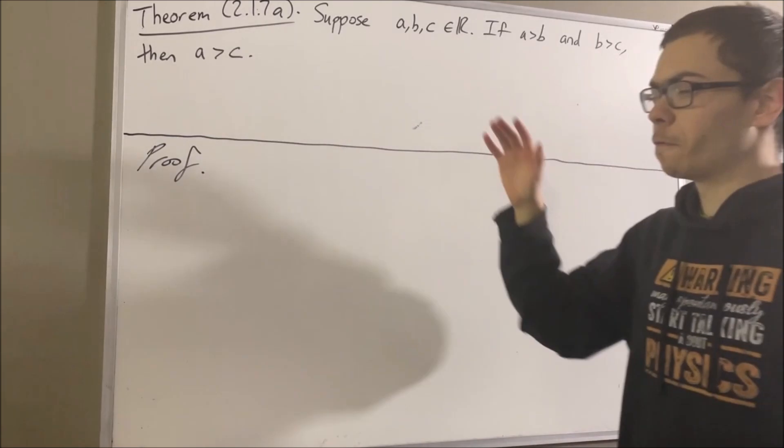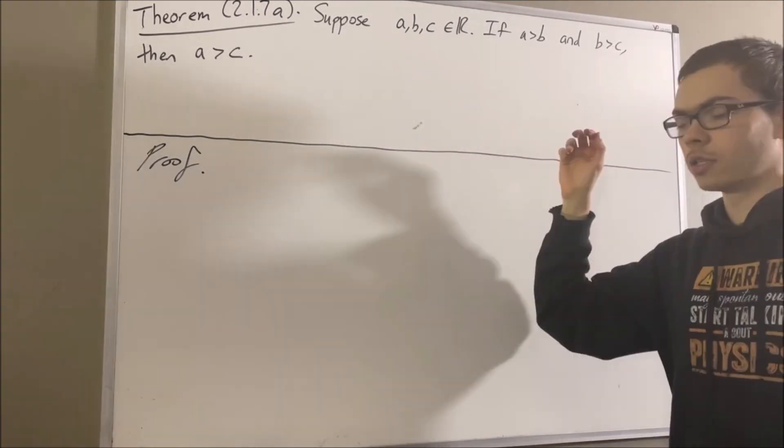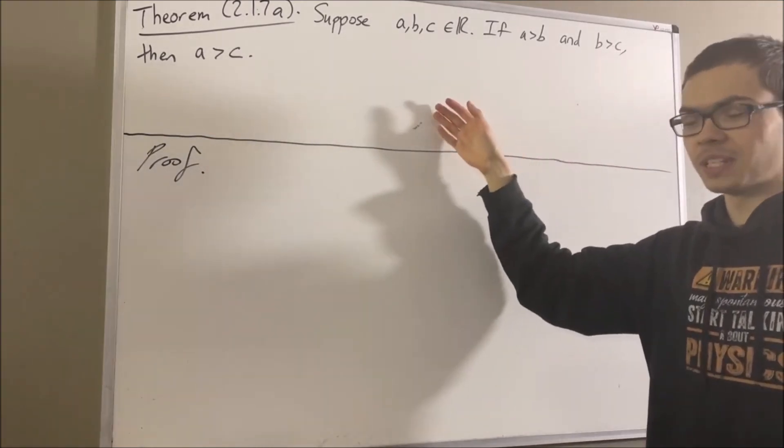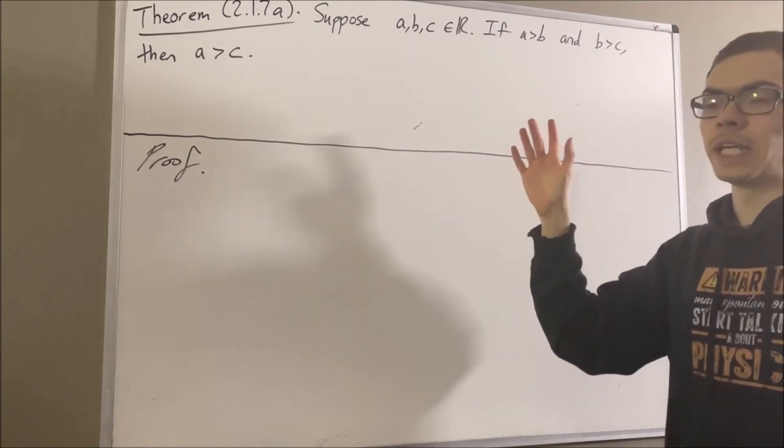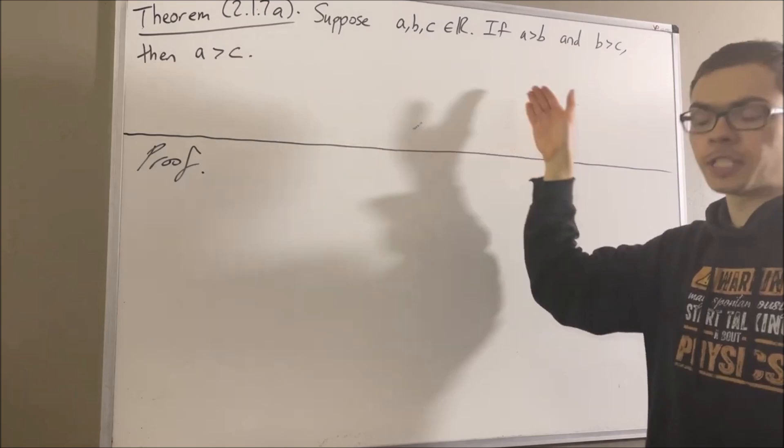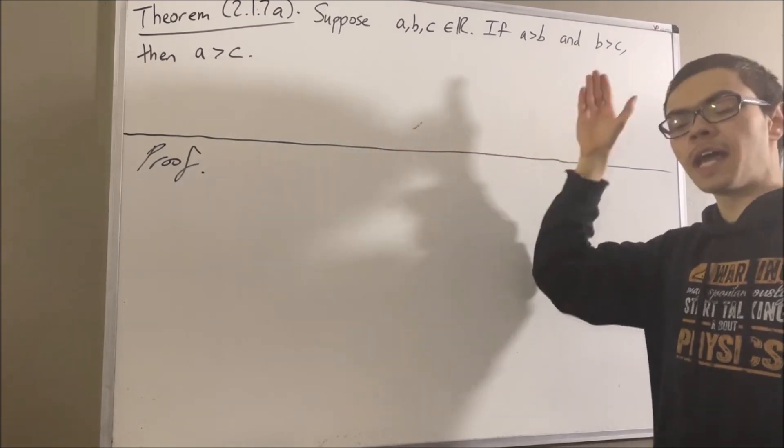Just a few facts before we get into the proof. The first fact that we're going to use is that for every two real numbers a and b, we have that a minus b is greater than zero if and only if a is greater than b.